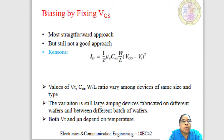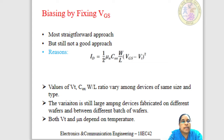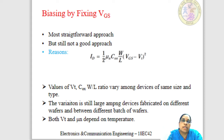Now let us begin with what is the technique of biasing by fixing VGS. In MOS amplifier circuits, in order to give DC biasing, this is the most basic and simplest method of fixing the bias voltage. Here, the bias voltage is nothing but VGS, the gate to source voltage — the capital V and capital G notation indicates it is a DC voltage. Even though it is the most straightforward approach, it is still not a very preferable approach.